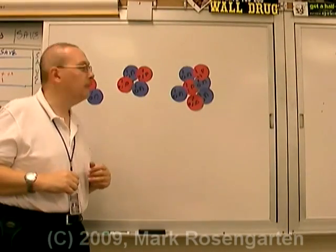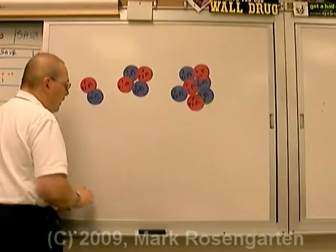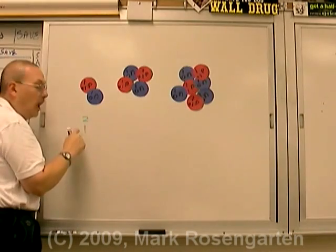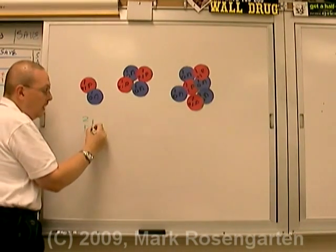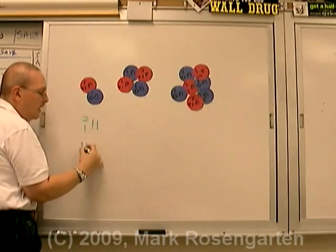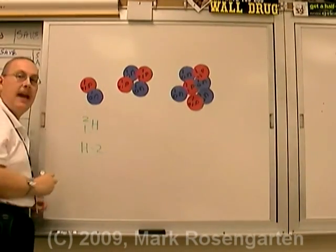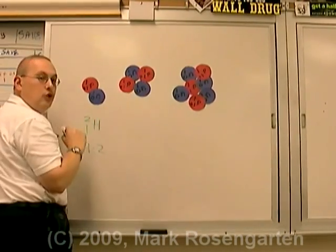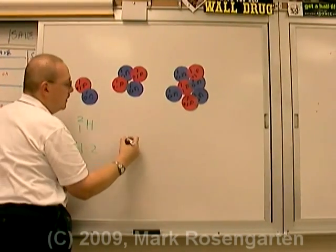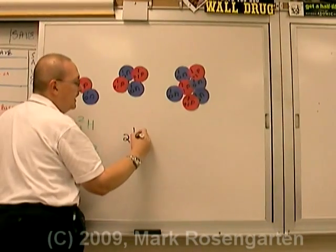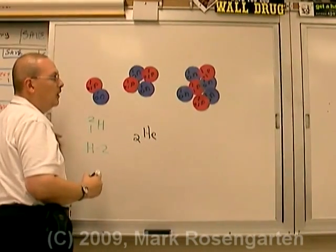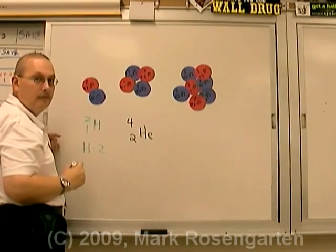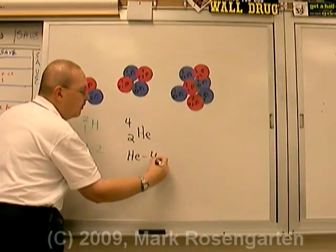So let's see if we can identify which isotopes we have here. Here we have one proton and two particles in the nucleus. An element with one proton is hydrogen. This can also be written as H-2 because the mass is two amu. This element contains two protons in the nucleus — the element with two protons is helium. There are four particles in the nucleus for a total mass number of four. This can also be written as helium-4.